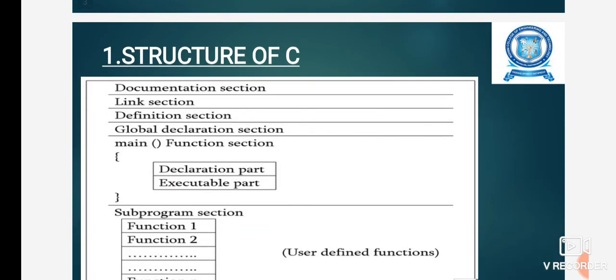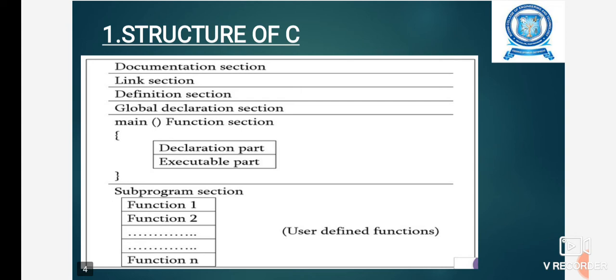The first topic of unit 1 is Structure of C. This is the syntax of a C program structure. The first one is documentation section, then link section, definition section, and global declaration section. The next part is the main function with two subparts: declaration part and executable part. The next one is subprogram section where we include functions, also called user-defined functions.